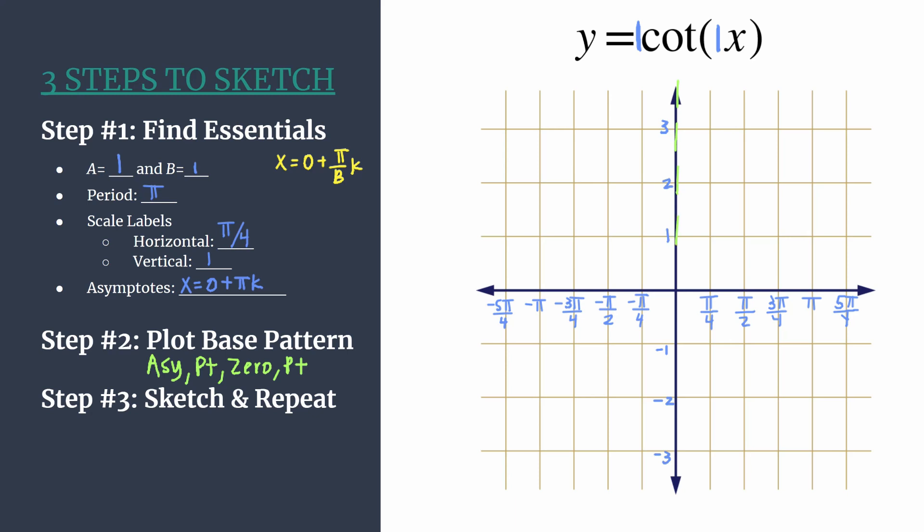We start with our asymptote here on the y-axis. Our first point should align with our first horizontal tick mark as we move to the right. And you find the y-coordinate of this point simply looking at the value of a. So our a is one, so the point happens at pi over four, one. Move to the next horizontal tick mark to the right, pi over two. We know that the third part of our base pattern is a zero or an x-intercept. So plot that point right there.